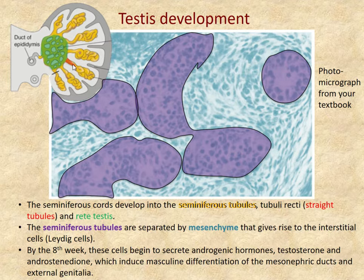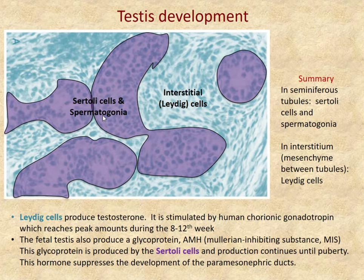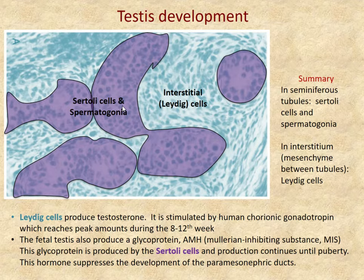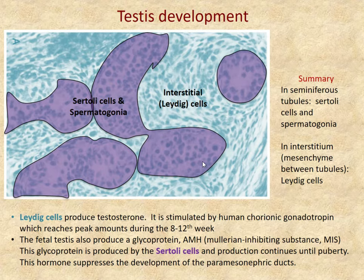The seminiferous tubules develop into straight tubules and the rete testis. Within the seminiferous tubules there are two important cell types: Sertoli cells, which secrete anti-Müllerian hormone (Müllerian inhibiting substance) and later secrete inhibin to concentrate testosterone in the tubules, and spermatogonia — the germ cells or sex cells within the seminiferous tubules. The cells that migrated from the walls of the umbilical vesicle near the allantois end up lining the seminiferous tubules.